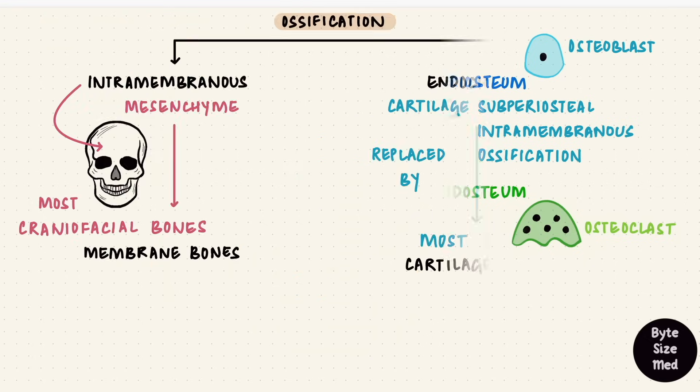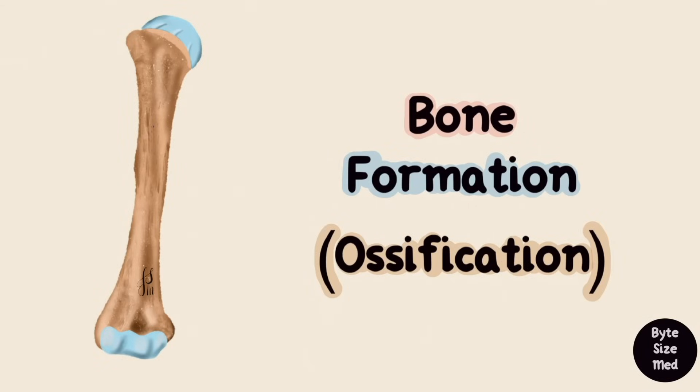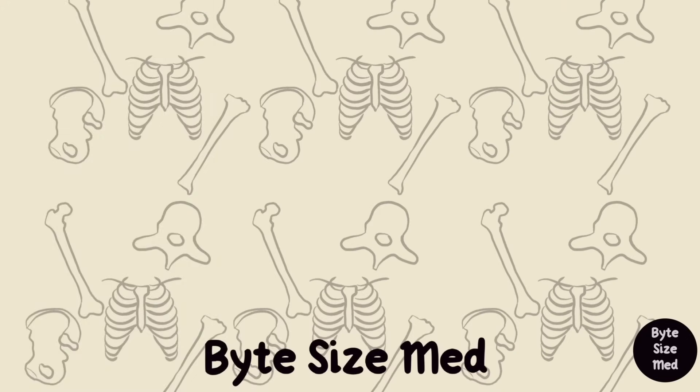So we've got intramembranous ossification without a cartilage template, and endochondral ossification with the cartilage template. And that's how bone develops and grows. That's the process of ossification. I hope this video was helpful. If it was, you can give it a like and subscribe to my channel. Thanks for watching, and I'll see you in the next one.